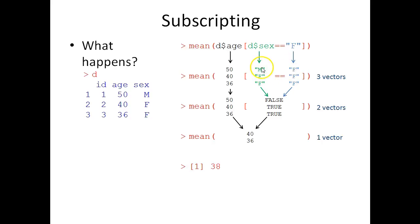So that each element in this vector is compared to an element in this vector. And when comparing M to F, that's not the same, you get false. F and F are the same, true. FF gives true.